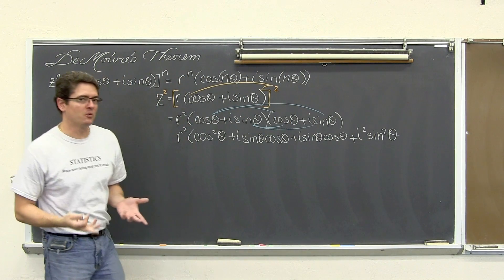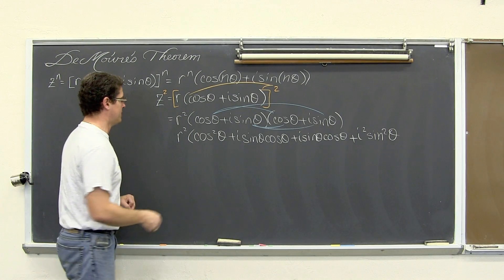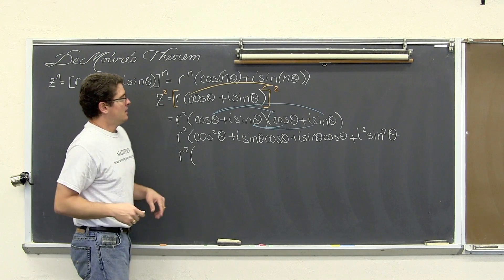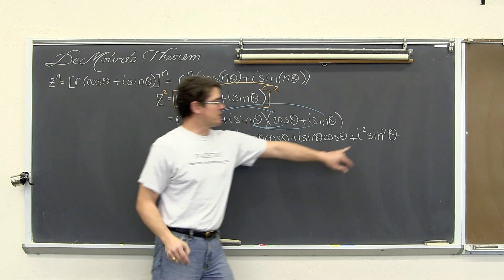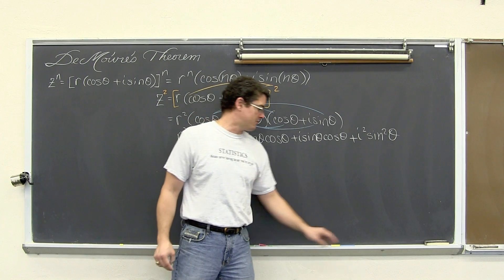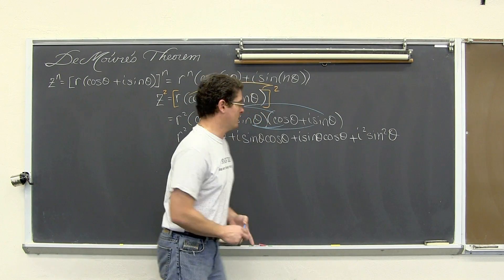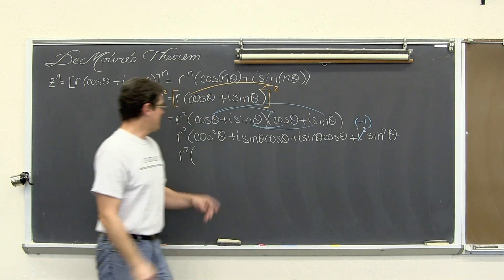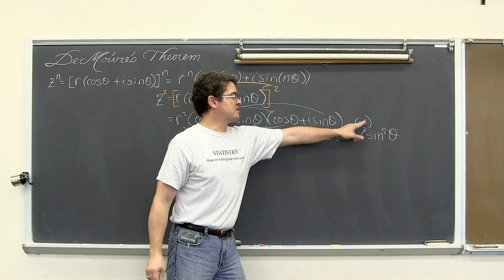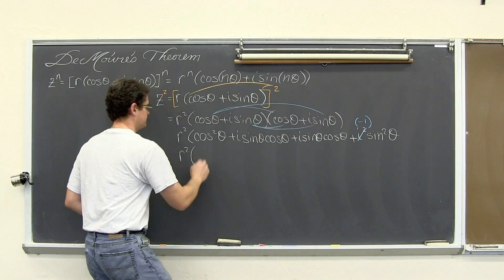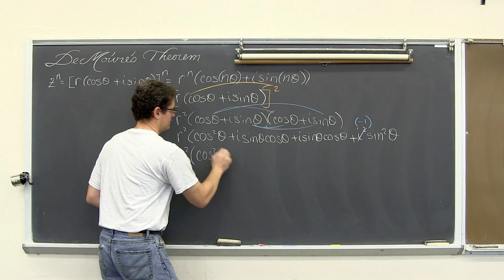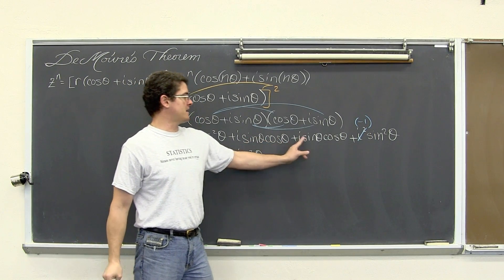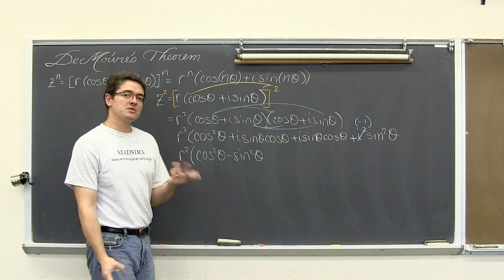Normally with a regular binomial we would end up with three terms, but we are only going to end up with two, and this is why. i squared, since i is the square root of negative one, i squared is going to be replaced with negative one. So we have cosine squared θ minus sine squared θ, and then the i sine cosine θ terms are like terms, so we just add those together to get 2i sine θ cosine θ.